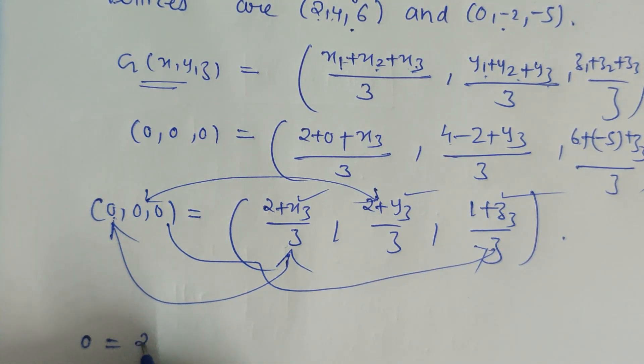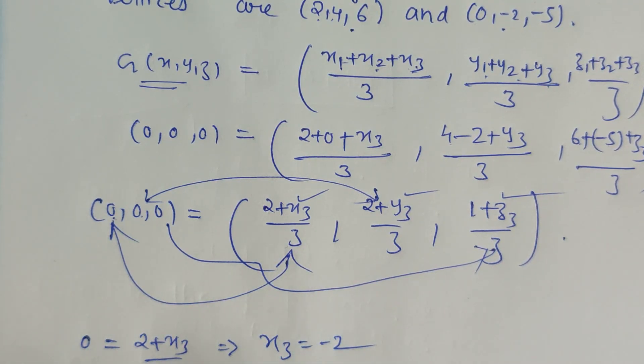This will give us the value for x3, y3, z3. So 0 when equated with (2+x3)/3 gives us x3=-2. And when the second coordinate, again 0, is equated with (2+y3)/3, we get y3=-2.